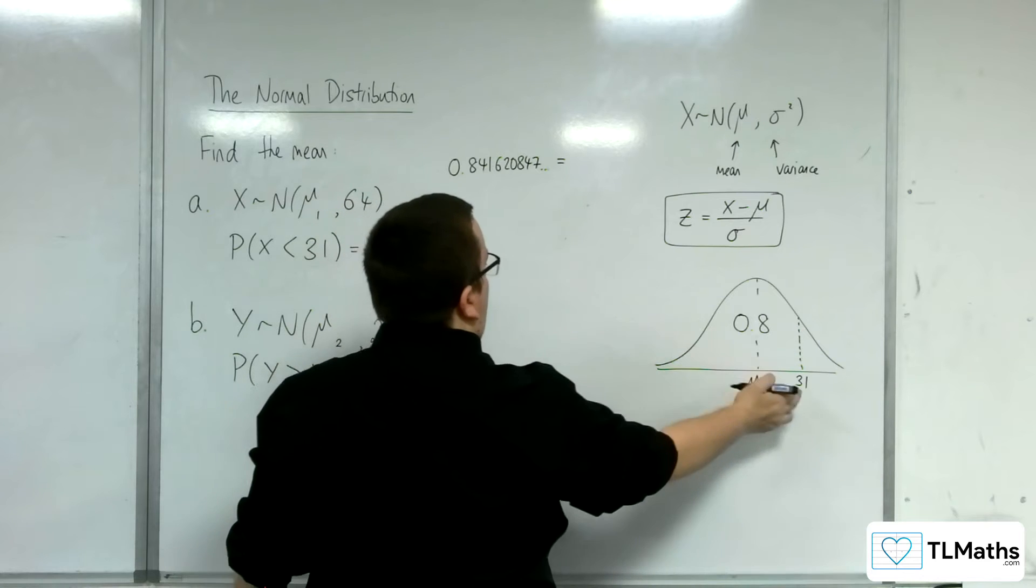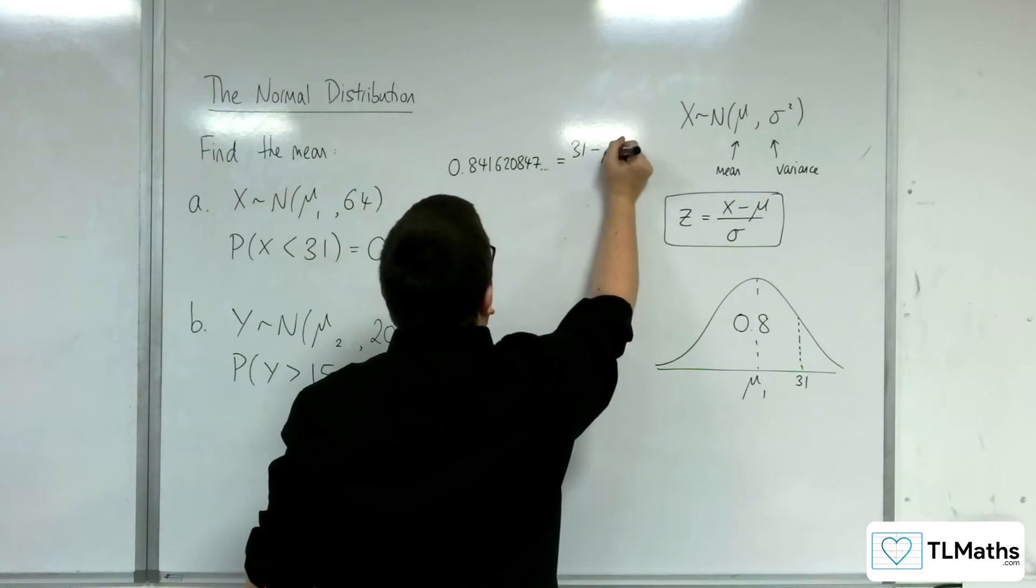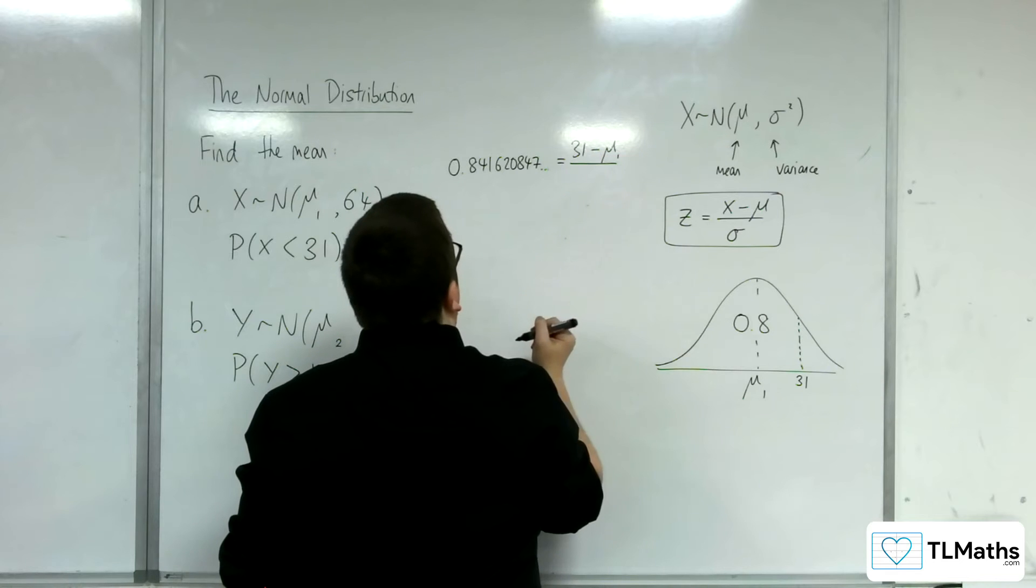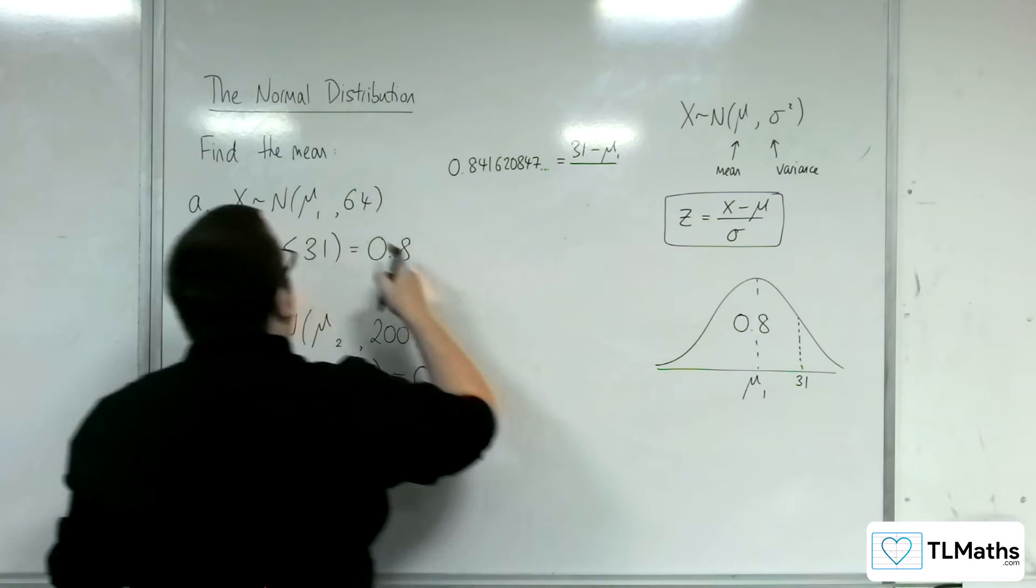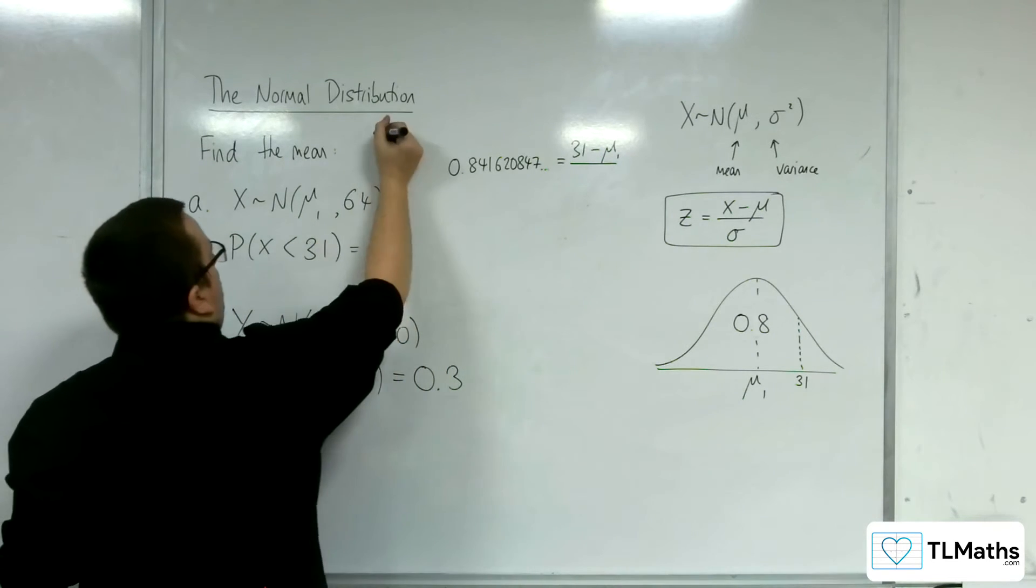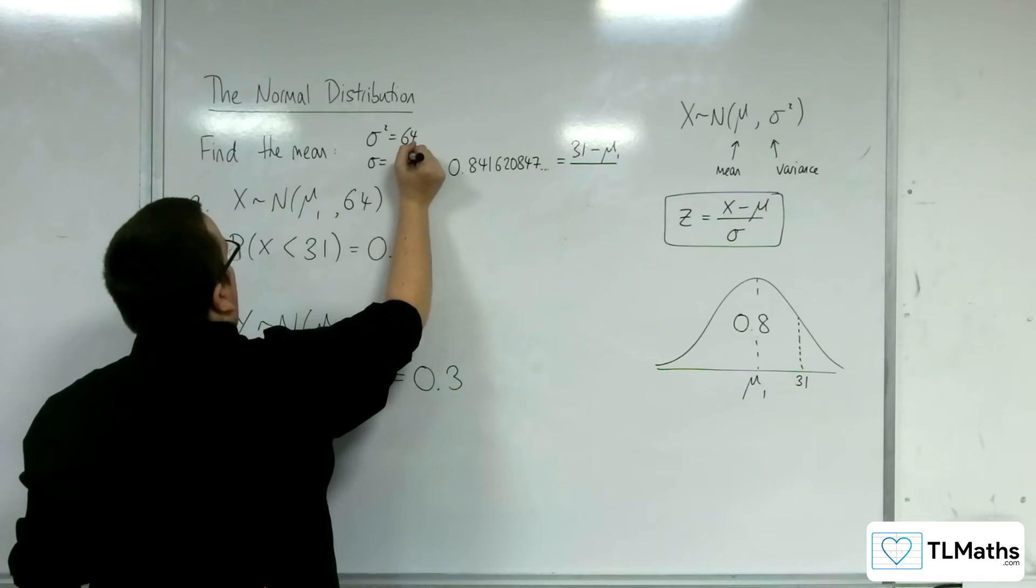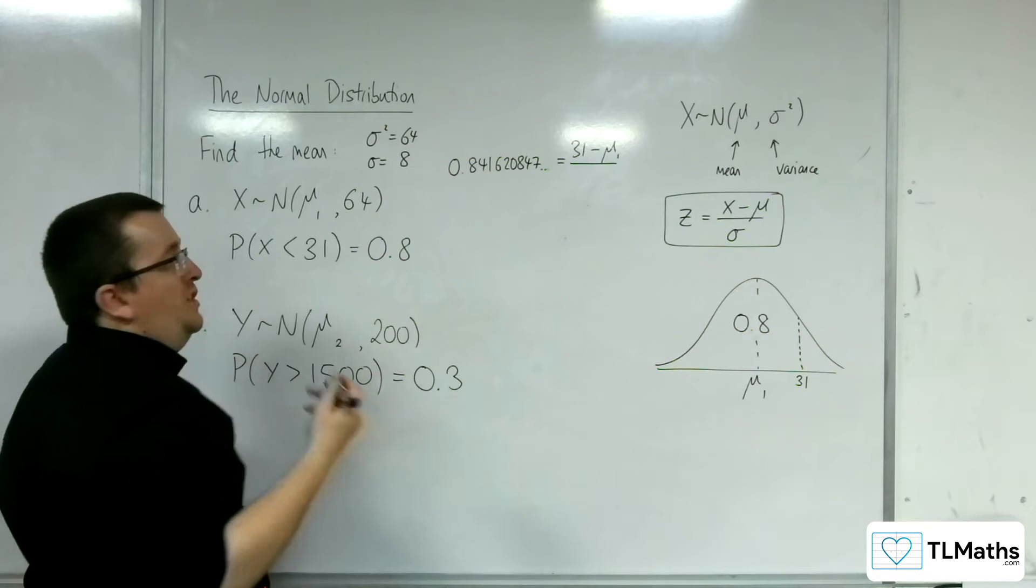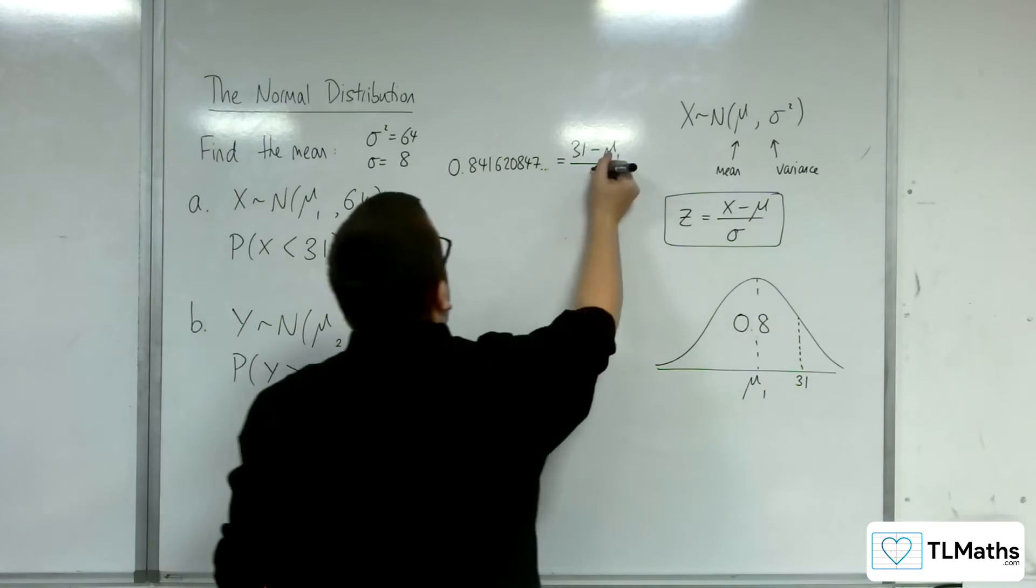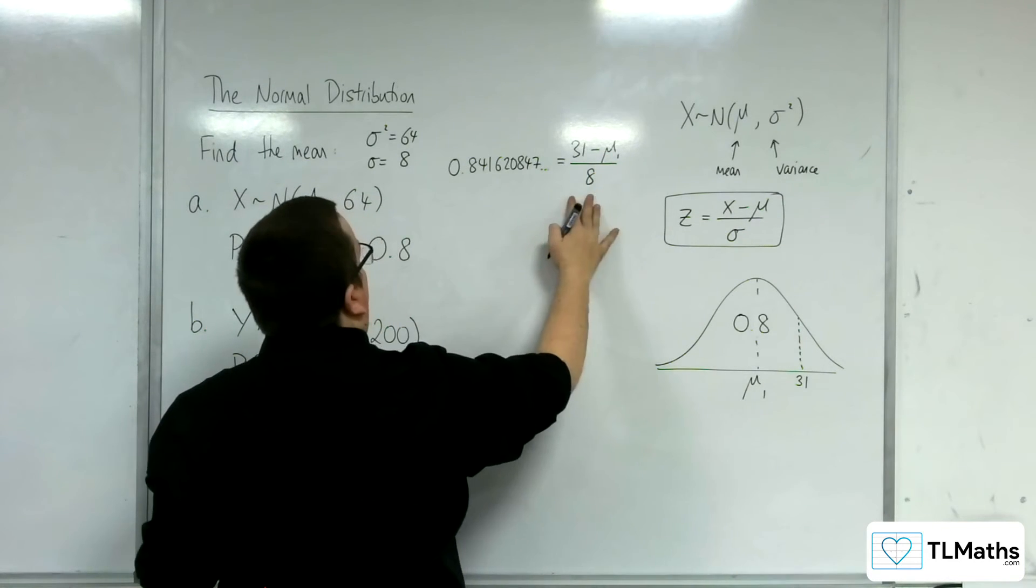The x value is 31. The mean, we don't know, that's what we want to find. The sigma, when we go to this distribution, the variance is 64, so sigma must be the square root of 64, which is 8. So we need to solve this equation.